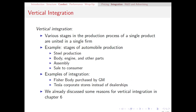For example, there's quite a bit of vertical integration that has happened in the automobile industry. Let's think about a few stages that exist in automobile production: the production of steel as a raw material, the building of all the various parts of the car including the body, engine, mirrors, and wheels, then the assembly of the car putting all those parts together into a working vehicle, and finally the actual sale to the consumer.